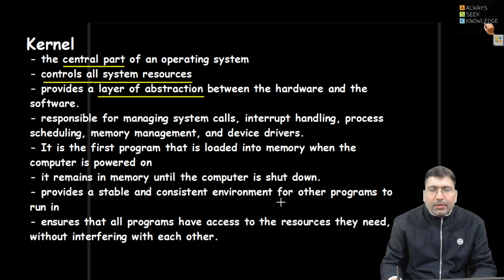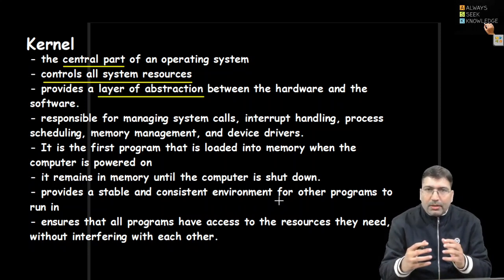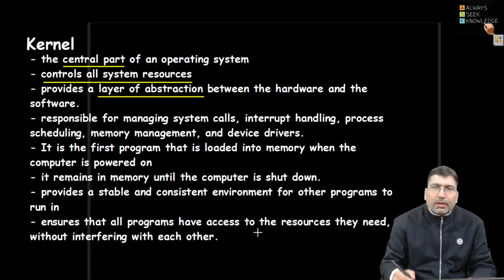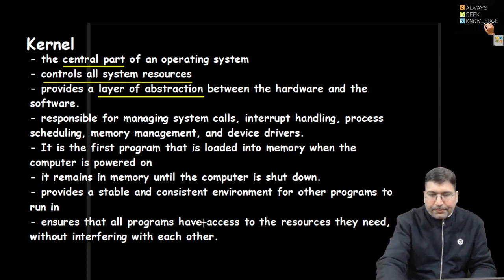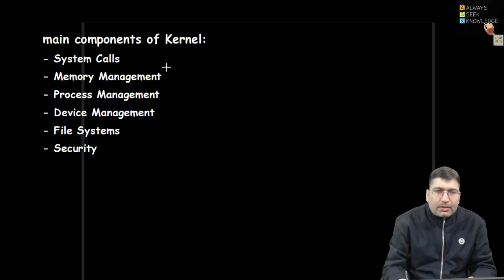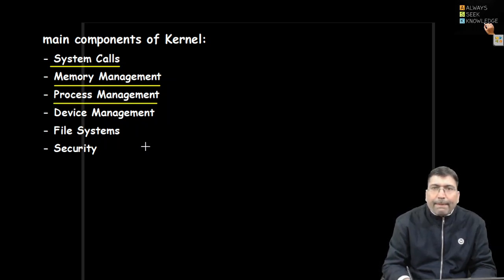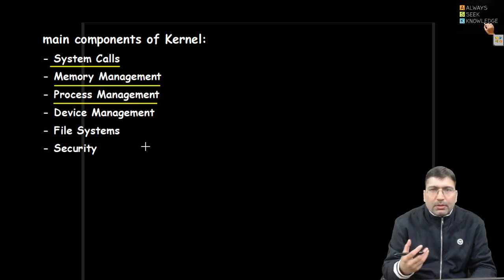The kernel provides a stable and consistent environment for other programs, giving support to each and every program in the system, like the compiler, shell, or any other program. It ensures that all programs get the required resources in terms of memory or other things. The main components of kernels include system calls and memory management related modules — the kernel takes care of the management of physical memory and virtual memory, as well as process management: how a process will be initiated, allocation of memory to processes, and management of process scheduling.